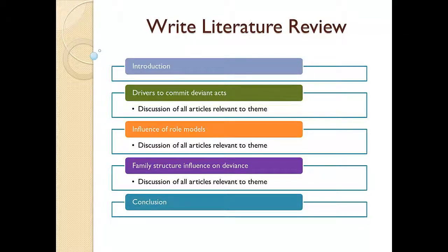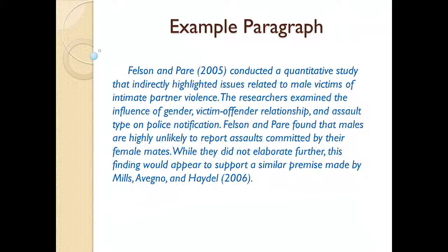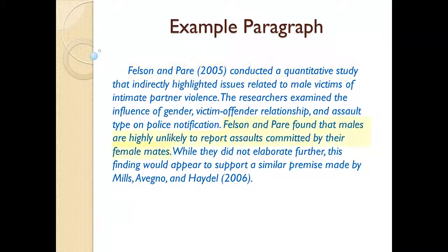Now that I have discussed the concepts, let's look at an example paragraph for a literature review. This is an actual paragraph taken from a literature review that was part of a research study I conducted on intimate partner violence. Let me highlight some of the features: you will notice I have succinctly described the type of research that was conducted, highlighted the findings of the study, and demonstrated how this information was relevant to my study. Near the end of the paragraph, I also tied this article to another article I was reviewing.